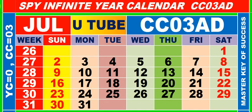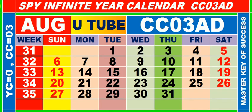Calendar for the month of July, having calendar code equal to 03. Calendar for the month of August, having calendar code equal to 03.